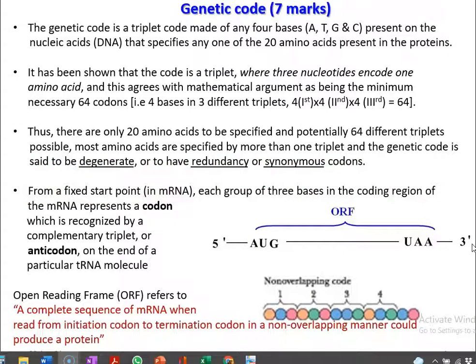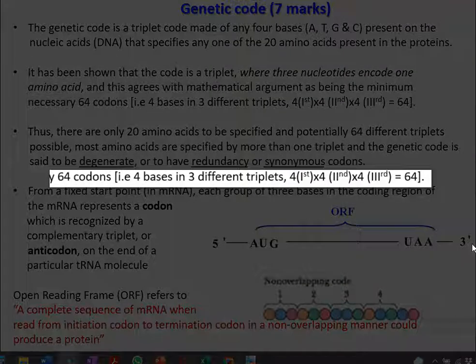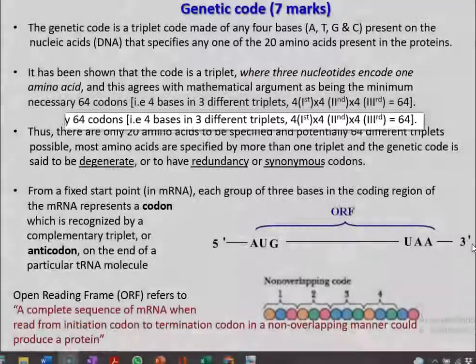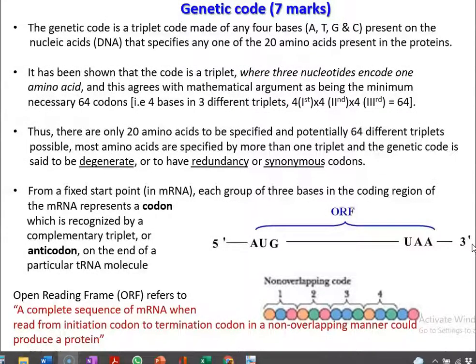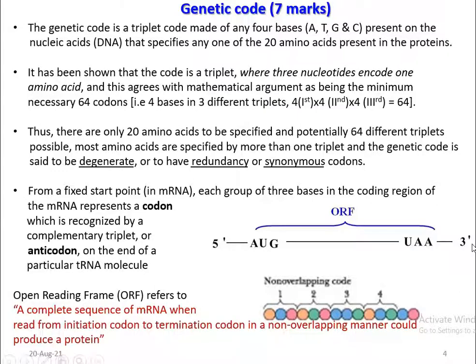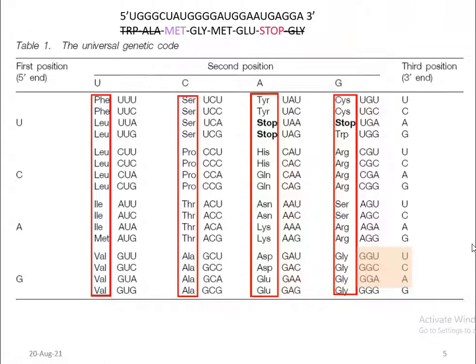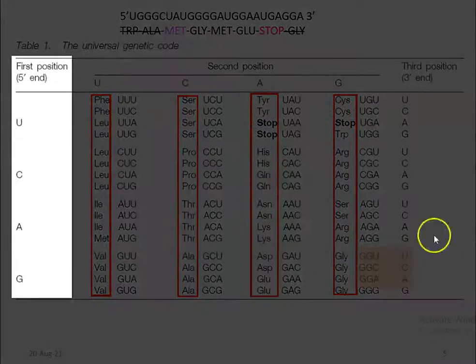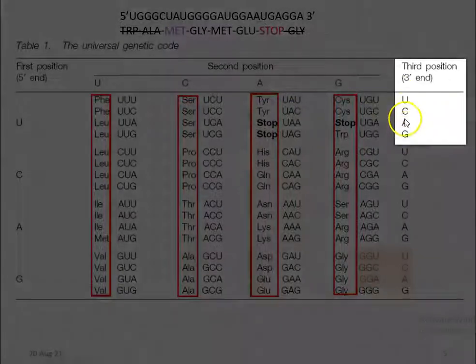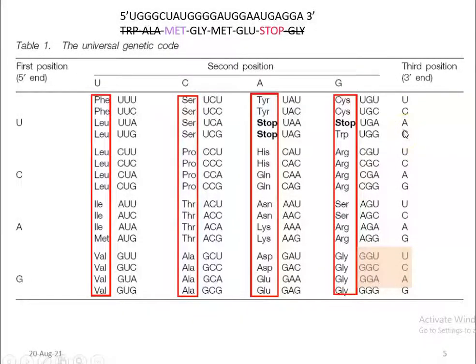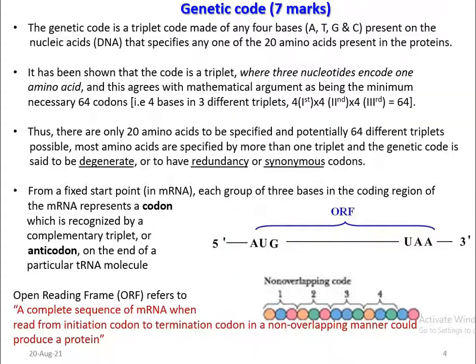Based on certain mathematical arguments, it has been recorded that a minimum of 64 codons could be present in the living system. This value is arrived at based on 4 bases present as 3 different triplets — that is 3 different positions: 1st position, 2nd position, and 3rd position of the triplet code. This can be well understood when you look at a table showing the various genetic codes present in living organisms. The 1st, 2nd, and 3rd positions together form a total of 64 codons that code for at least 20 amino acids.